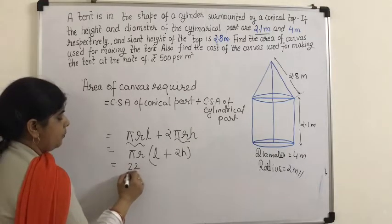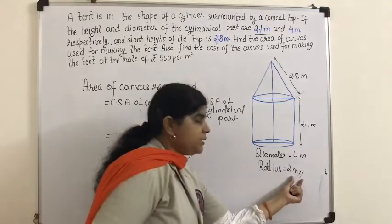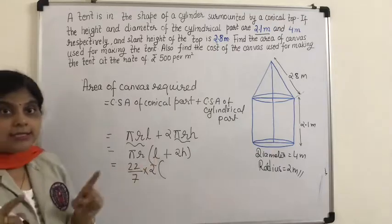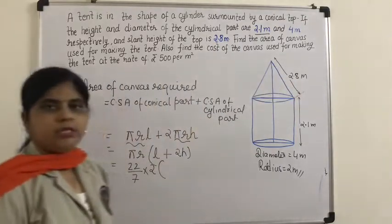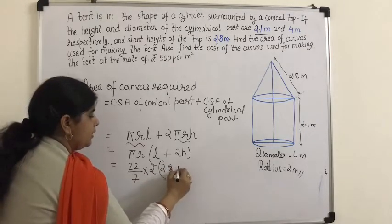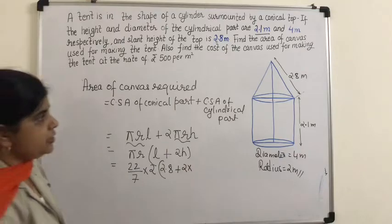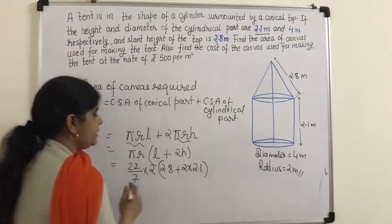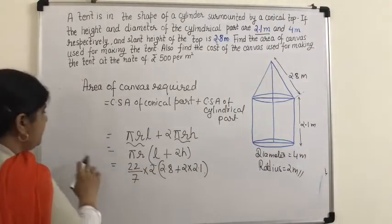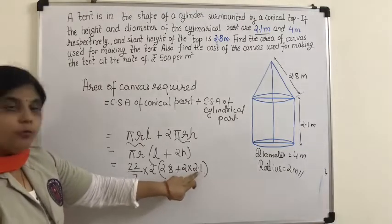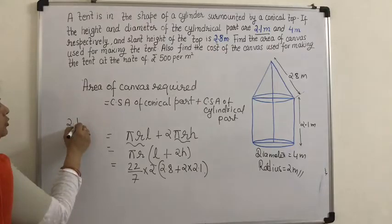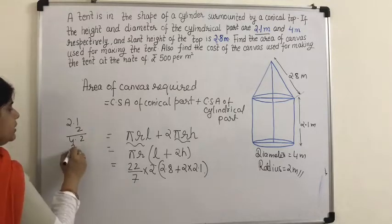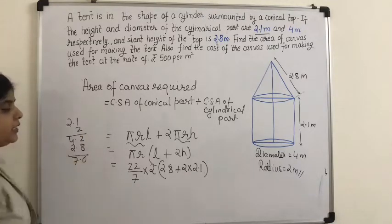Substituting values: π = 22/7, radius r = 2 meters, slant height l = 2.8 meters, height h = 2.1 meters. Inside the bracket: 2h = 2 × 2.1 = 4.2, and 4.2 + 2.8 = 7.